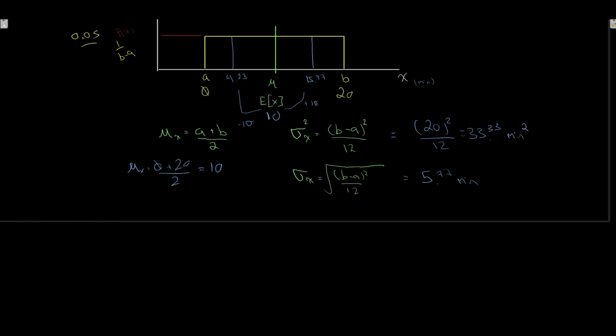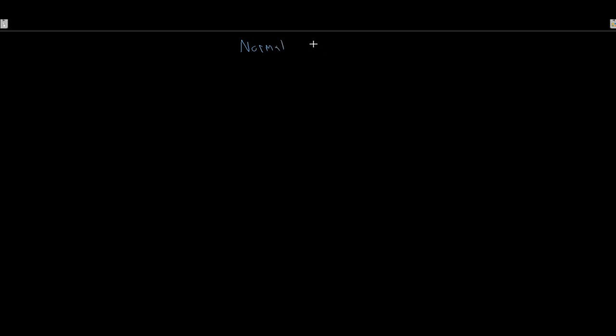Those are the characteristics and the idea behind the uniform distribution — it was used to introduce the basic properties of a continuous density function because it's a fairly easy distribution to work with. What we're going to look at now is really our bread and butter for the rest of the course: the normal distribution. We'll look at characteristics of the normal — or the normal family of distributions — and how to actually utilize it.